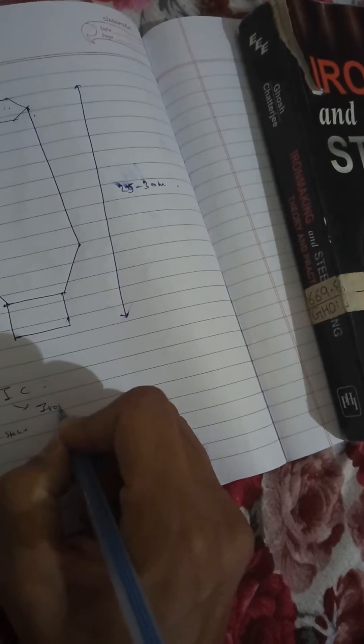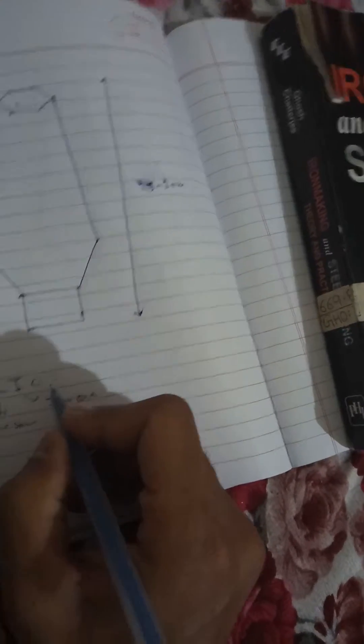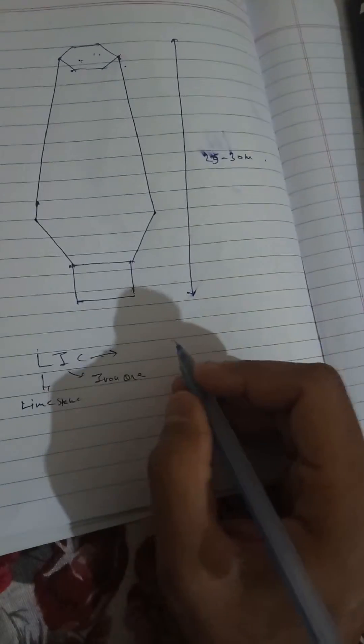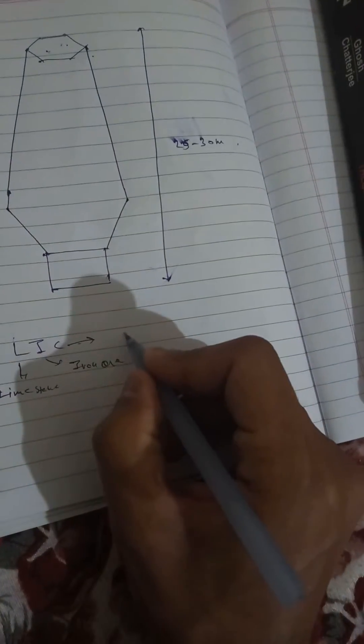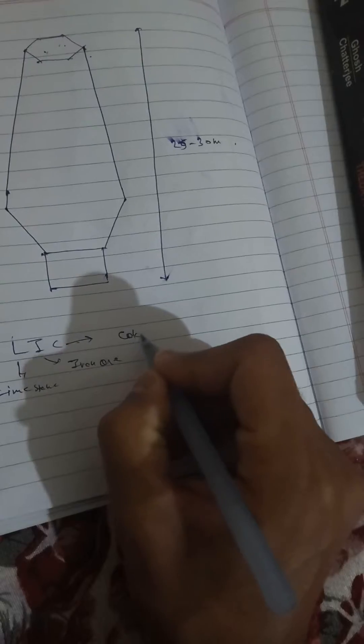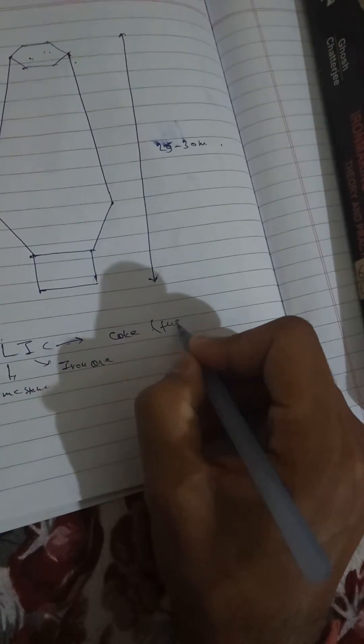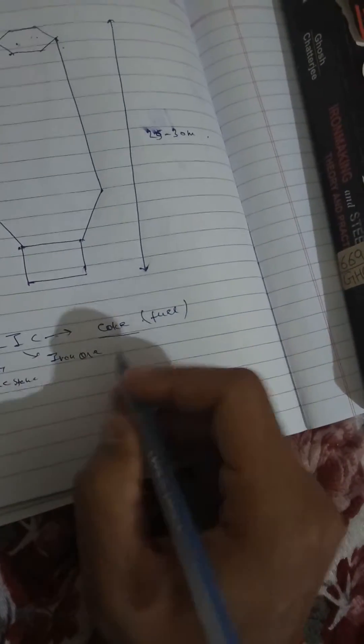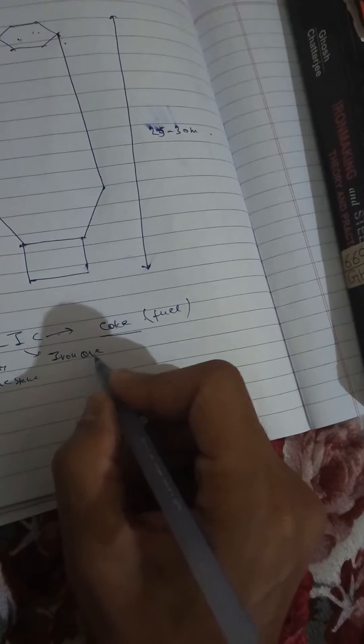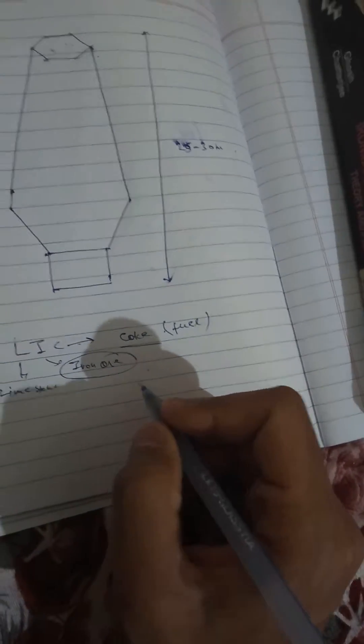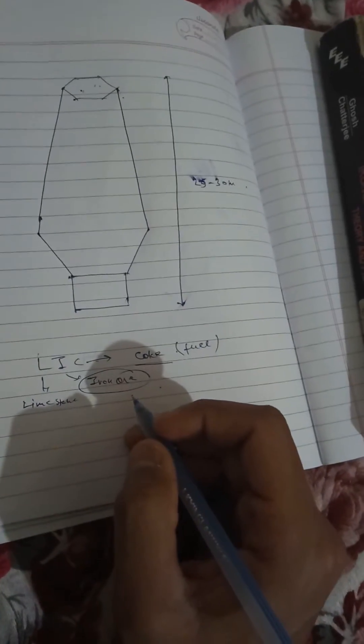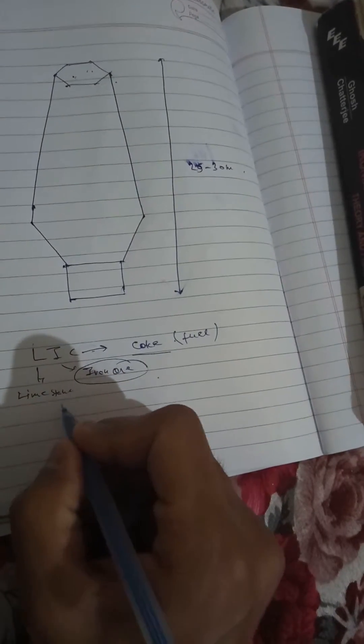I for iron ore, and C for coke, which is fuel. Iron ore is the main component which we have to refine into pig iron, and limestone is the flux.